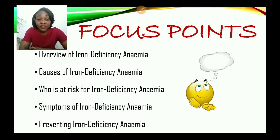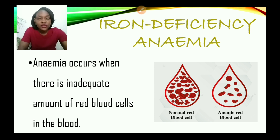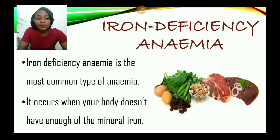Anemia occurs when there is an inadequate amount of red blood cells in the blood. Based on this image, you can see a comparison: one diagram shows normal red blood cells and the other shows fewer red blood cells. The normal diagram represents someone who doesn't have iron deficiency anemia, while the other showcases the blood of someone who is anemic.